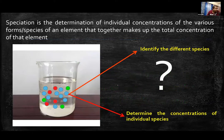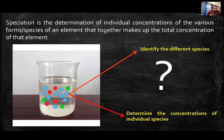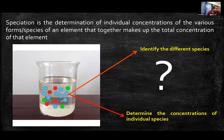Speciation is basically the determination of individual concentrations of different species of an element that together make up the total concentration of that element. As you can see in that beaker, there is some solution with several analytes shown by different colored circles. Speciation aims not only to identify the different types of species of particular analytes, but also to determine their individual concentrations.